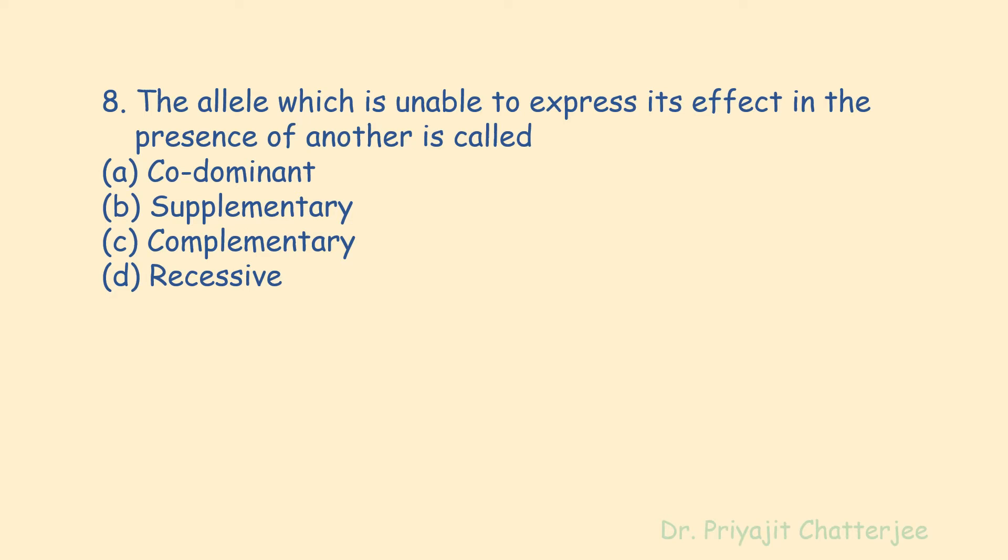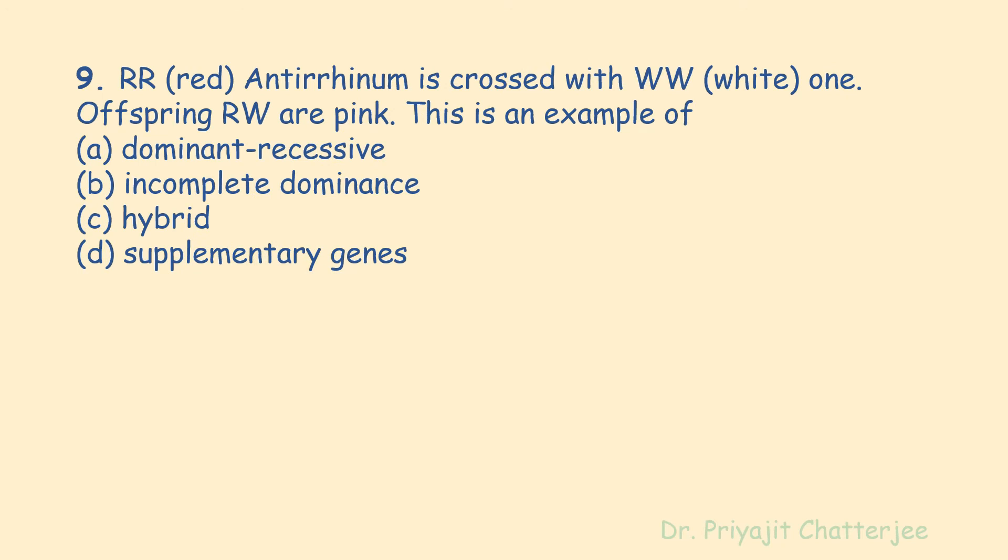The next question: the allele which is unable to express its effect in the presence of another is called — options are co-dominant, supplementary, complementary, or recessive. The correct answer is recessive. The allele which is unable to express its effect in the presence of another is called recessive — a member of a pair of alleles that does not show its effect in the phenotype in the presence of the other allele. It is denoted by a small letter.